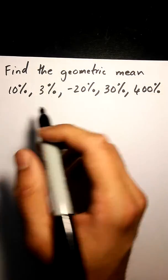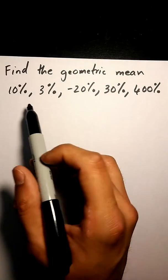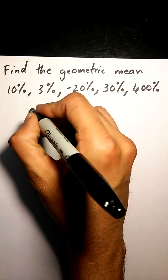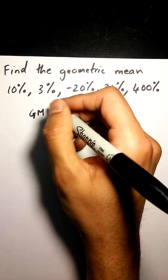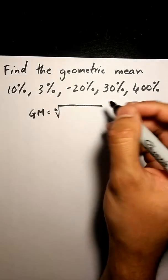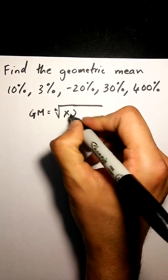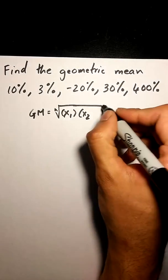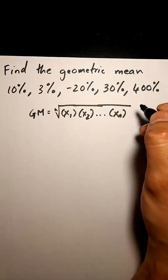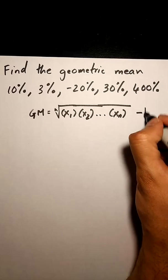Okay, when trying to find the geometric mean, remember when they give you individual percentages for each row, the formula is the first one, which is basically nth root of x1 times x2 times dot dot dot xn minus 1.